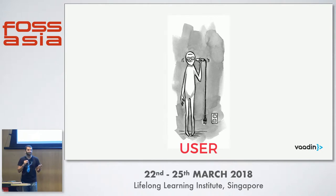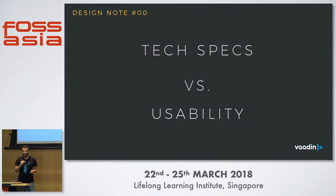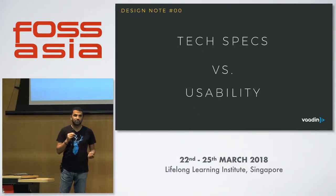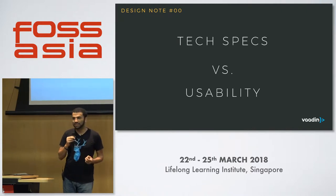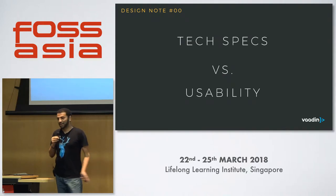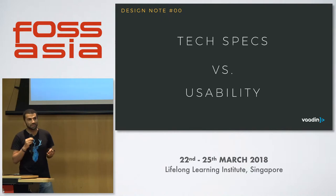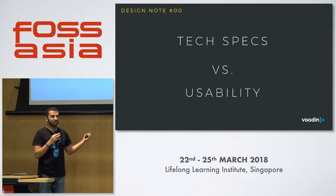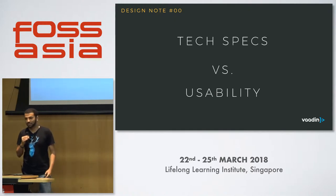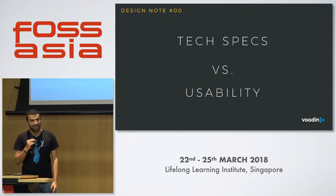You cannot pitch to users that your software is best because it's open source, or because it uses secure or specific technology. This is design thinking number one: you need to choose technical specification versus usability. If it just works, if it's intuitive and easy to use right away, then users will use it. And in an ideal situation, if you can combine both usability and open source and security, then you're on the ultimate best.